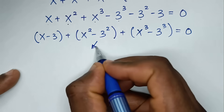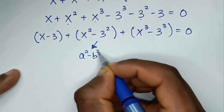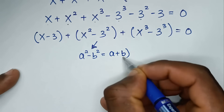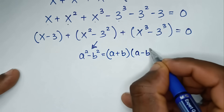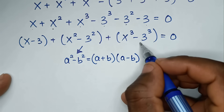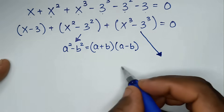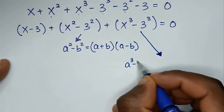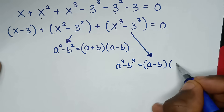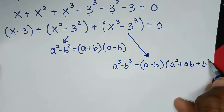This is in the form of the rule which is a squared minus b squared — difference of two squares — which is equal to (a plus b)(a minus b). And x power of 3 minus 3 power of 3 is in the form of the difference of two cubes rule, which is a power of 3 minus b power of 3, equal to (a minus b)(a squared plus ab plus b squared).